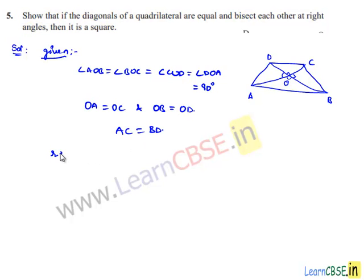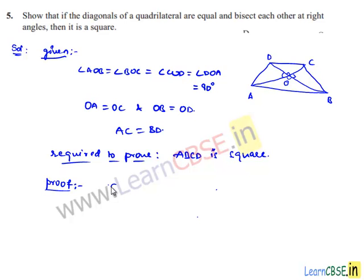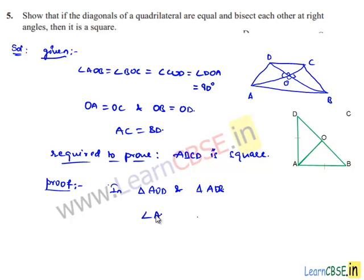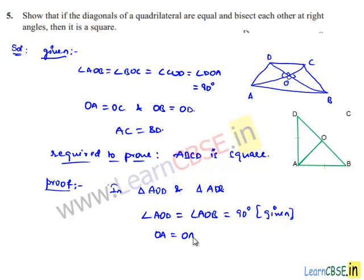He also says that diagonals are equal, so we can say AC is equal to BD. Now we are required to prove that ABCD is a square. Let us move on to the proof. Let us consider the two triangles — in triangle AOD and triangle AOB, angle AOD is equal to angle AOB is equal to 90 degrees, since AC and BD bisect each other perpendicularly.